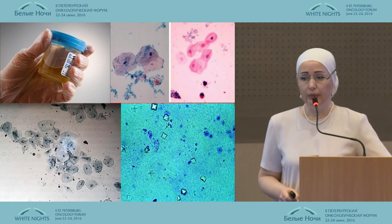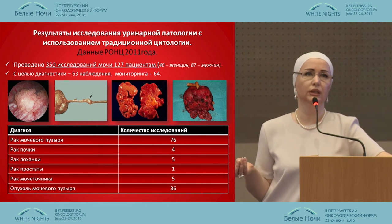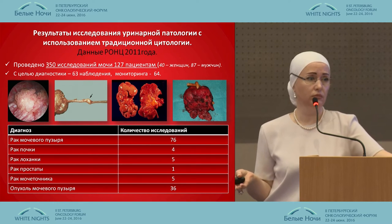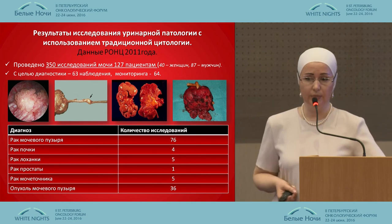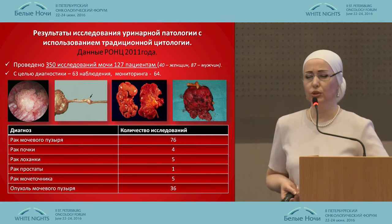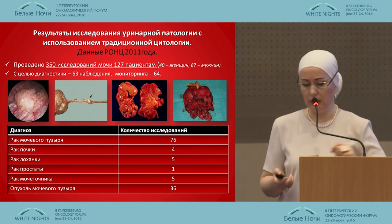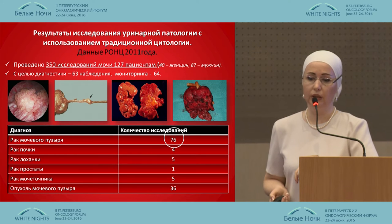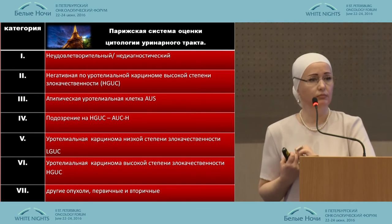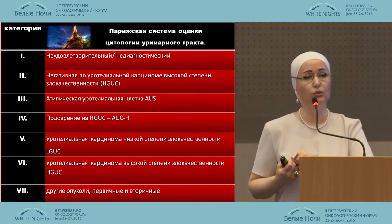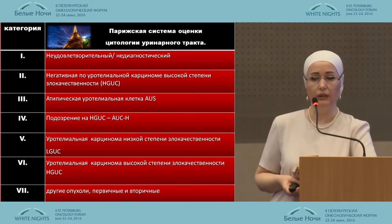As clinicians, we are interested in other things. Here are the microslides we usually get. I tried to evaluate whether conventional cytology works. I decided to analyze 350 urine analyses from 127 patients: 63 diagnostic observations and 64 monitoring cases. The majority were related to cancer of the urinary bladder and urine ducts. I based the analysis on the Paris system.